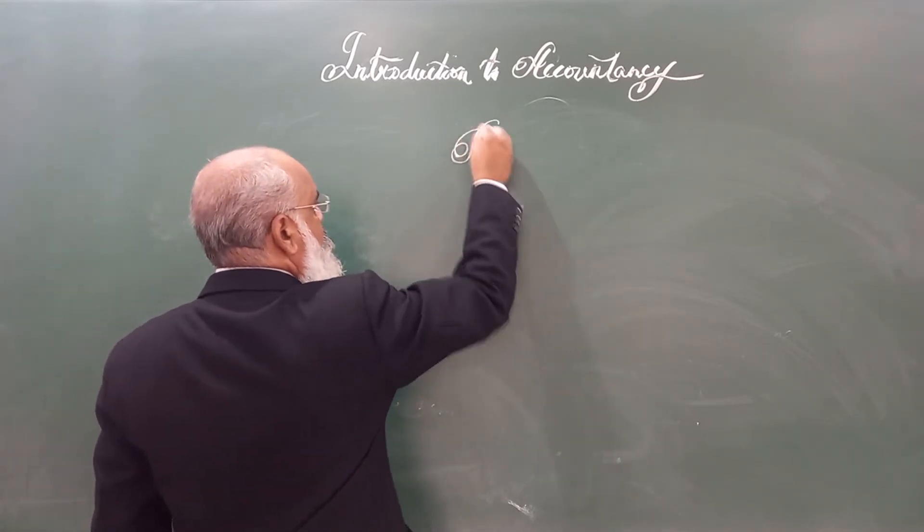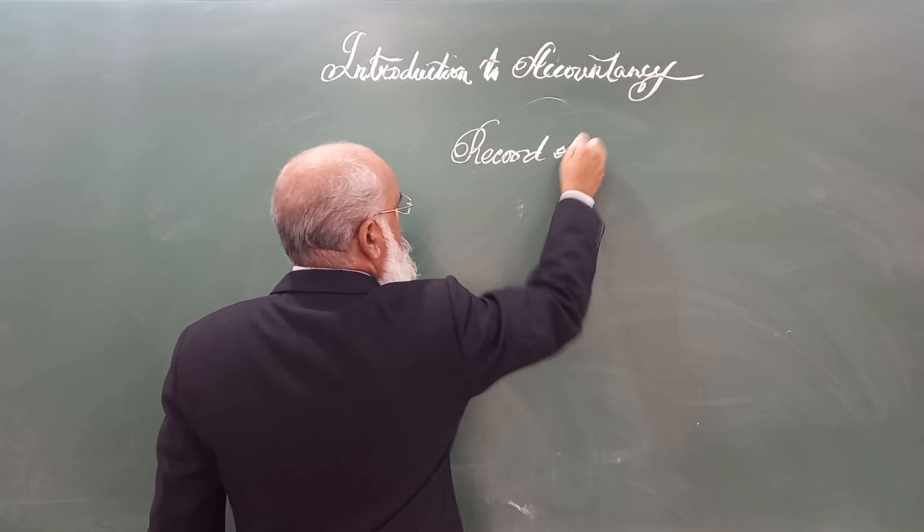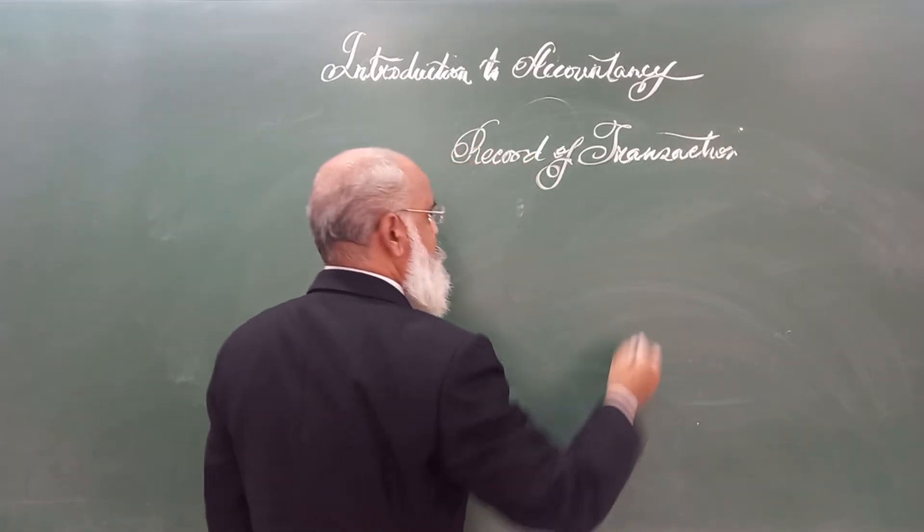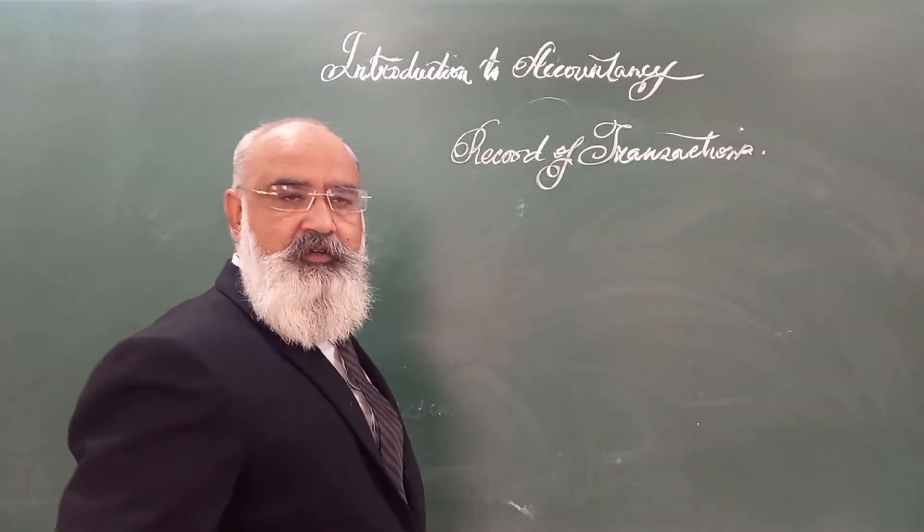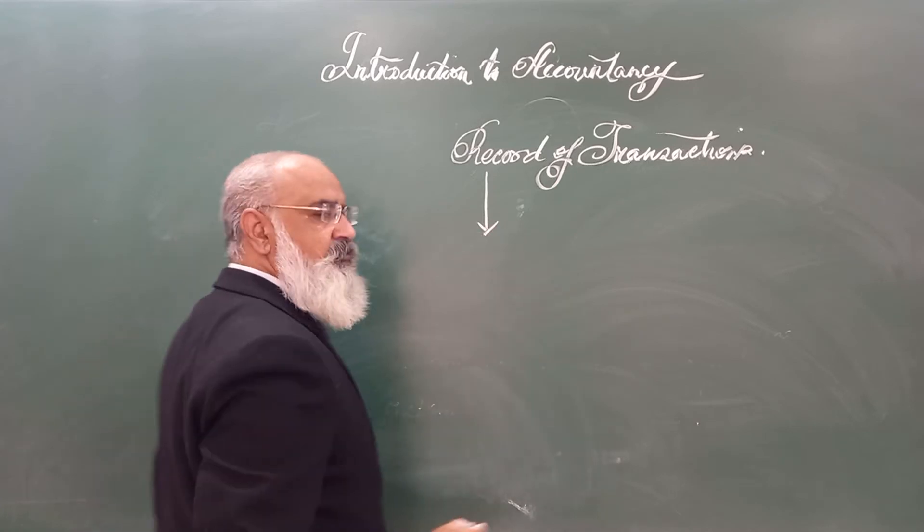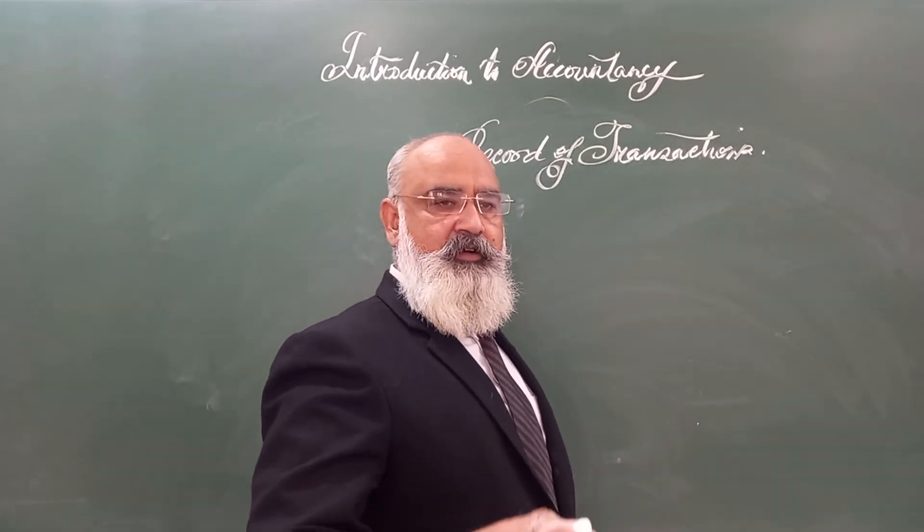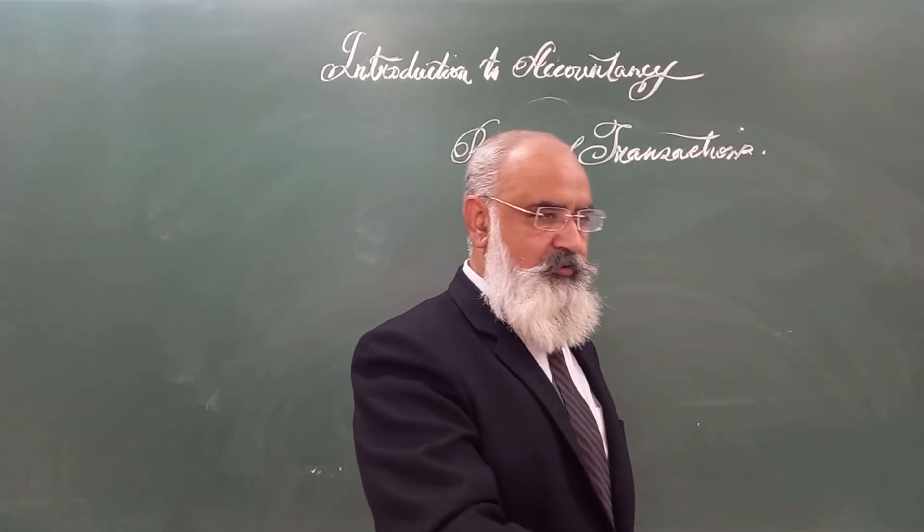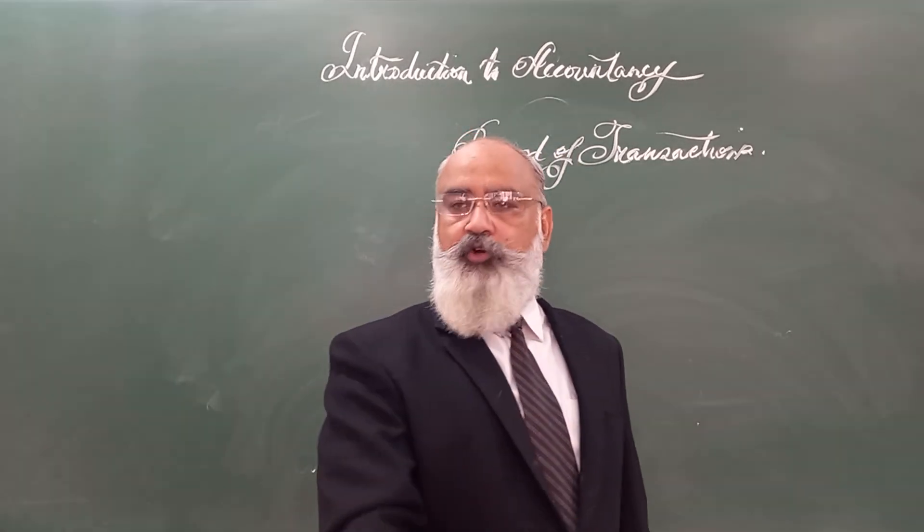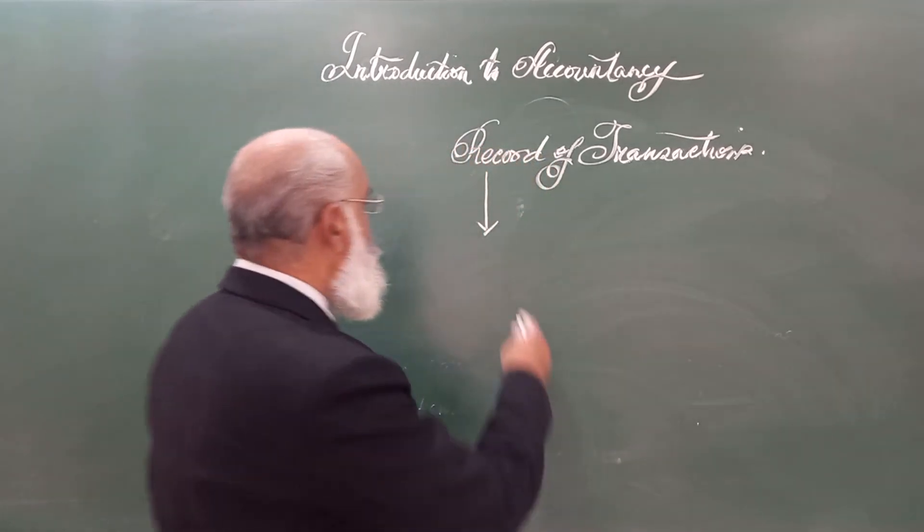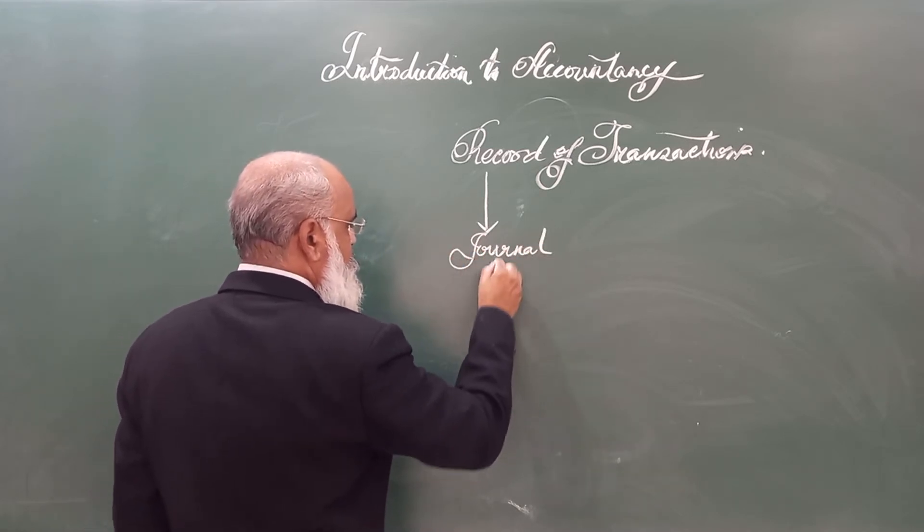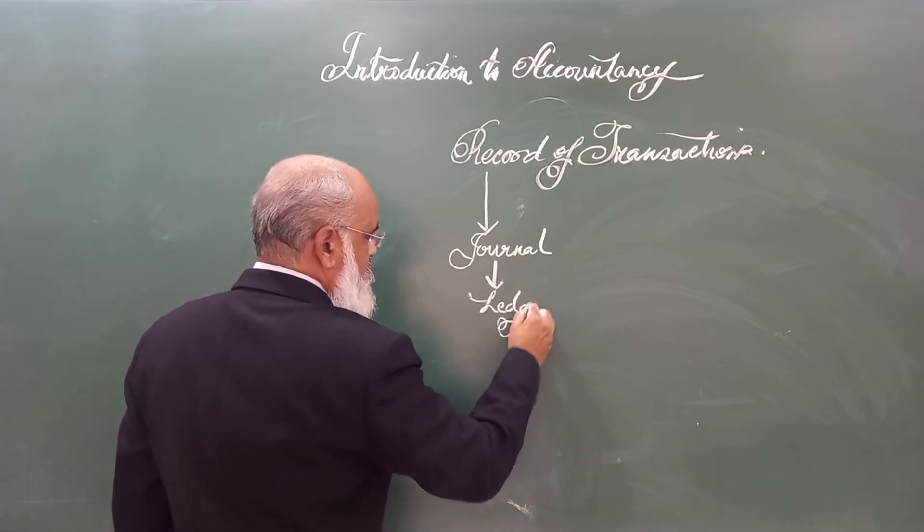The process is record of transactions that takes place in one financial year. From those transactions, now what is a transaction? The businessman, he bought a pen. Buying something for selling, we call it purchased goods. After record of transaction, he has to make a journal. After journal, ledger. After ledger, trial balance.